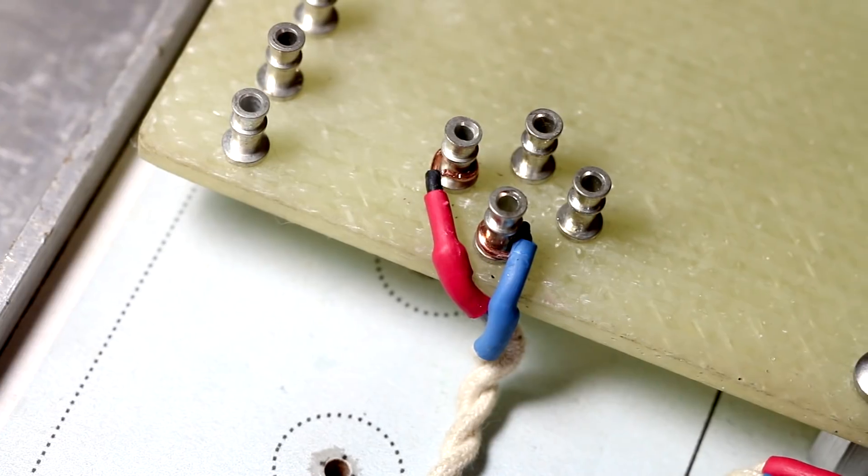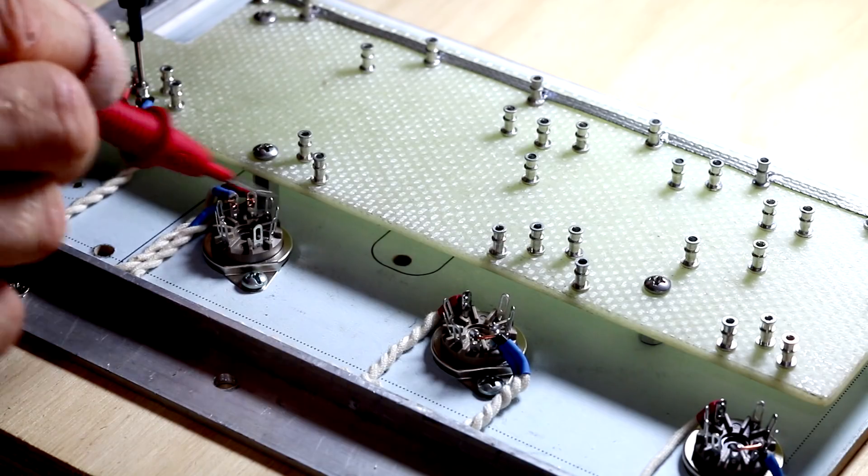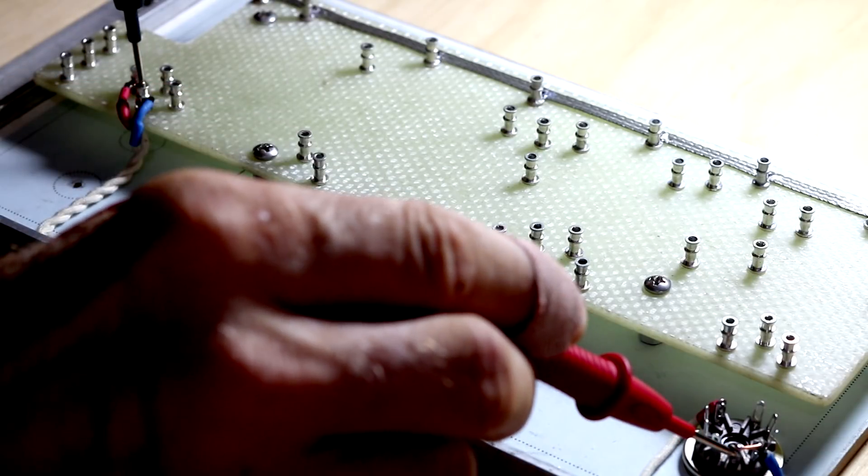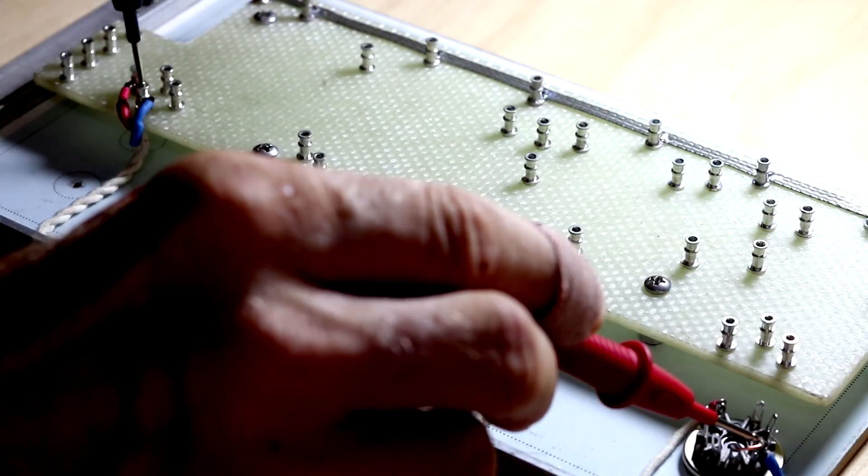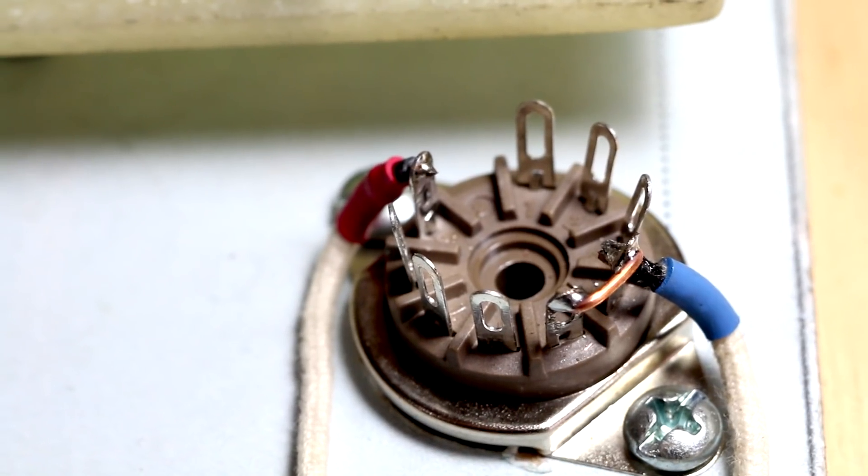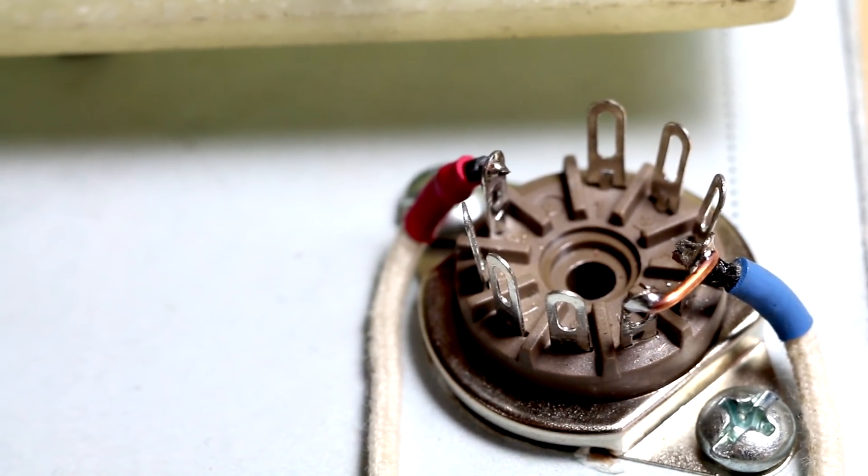All sorted, now we can move on. They're all good, right. Let's move on to components and I think we'll start with the resistors connected to the tube sockets on V1.